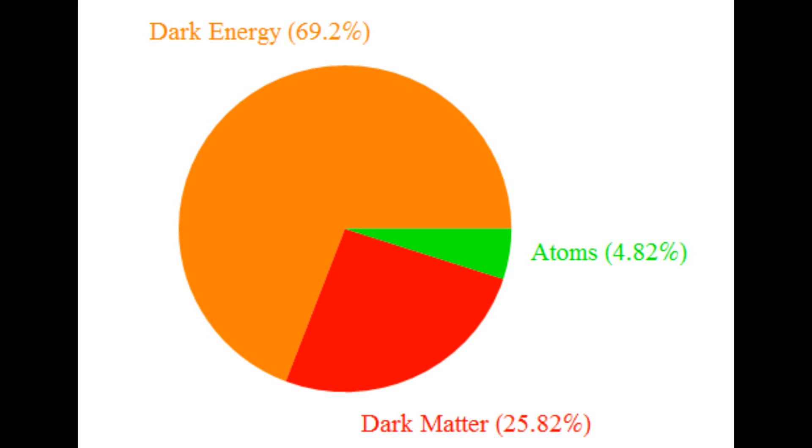4.82% of the mass of the universe is made of ordinary matter, that is, neutrons, protons, and electrons. However, only 10% of this mass is in stars. The remaining 90% is in intergalactic space, where it remains invisible to this day.